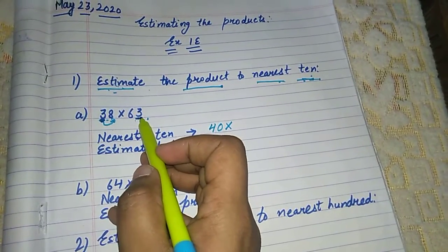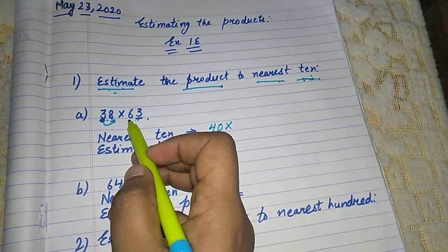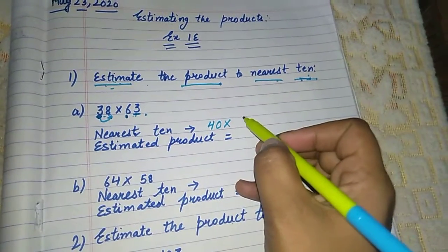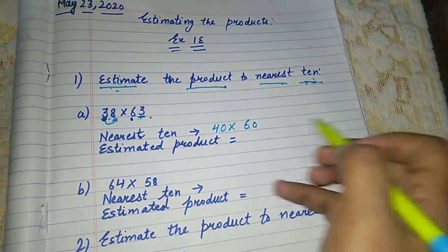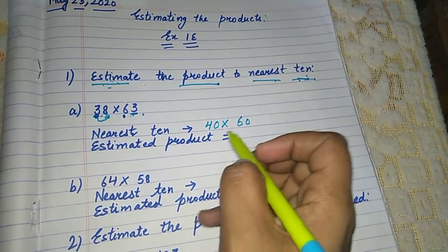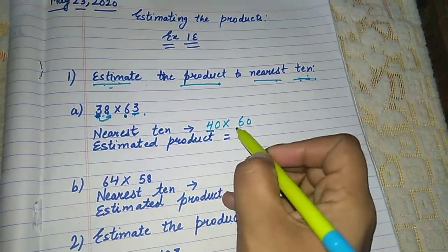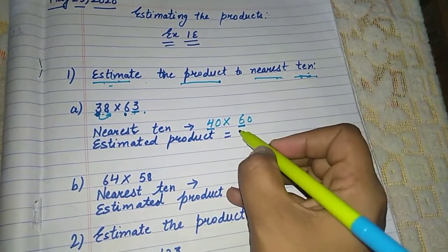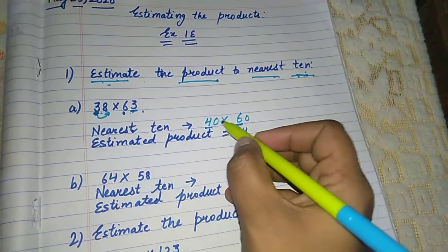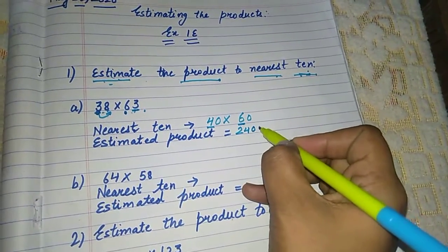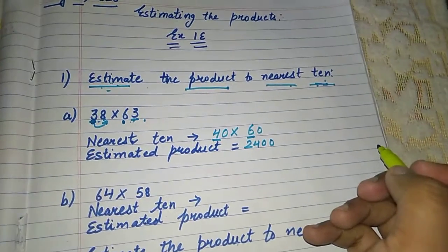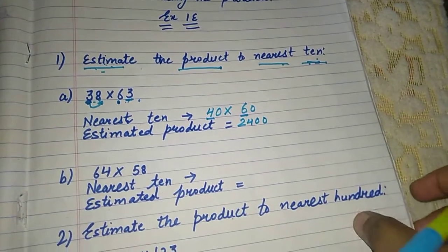When we check the three, it is weak number. That means this place, we will not add any addition to this place. So six will remain six and here is the zero. So estimated product, now what to do? We have to check. Here is the six and four. Four six, twenty four. How many zeros are here? Two. That means two zeros in the last. So this is the estimated product of 38 multiply 63.